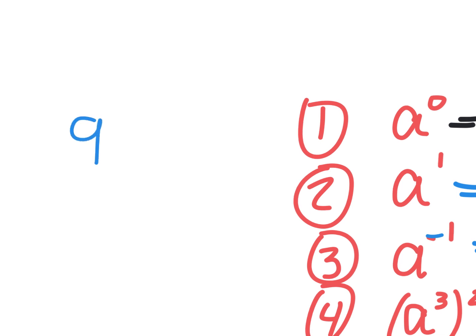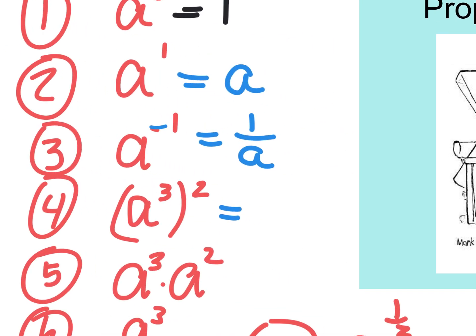So if I said nine to the negative one, it's saying hey, flip it over. One over nine. Do you get that? To a negative one power means flip it over. Next one.